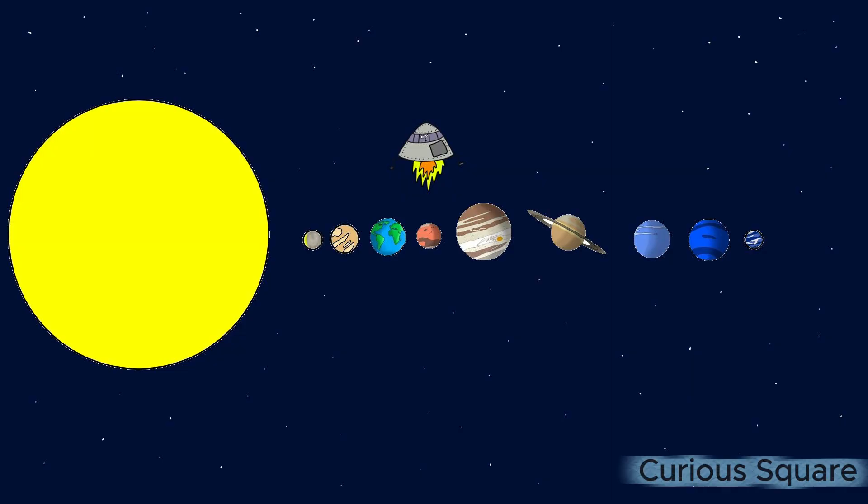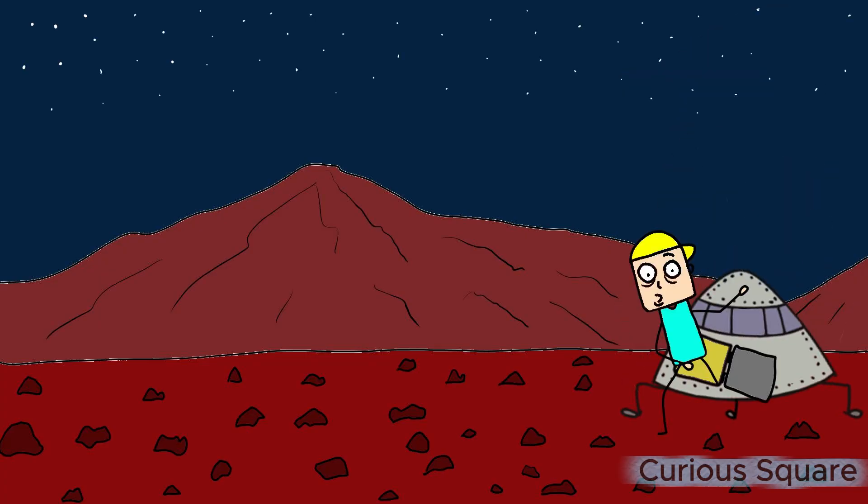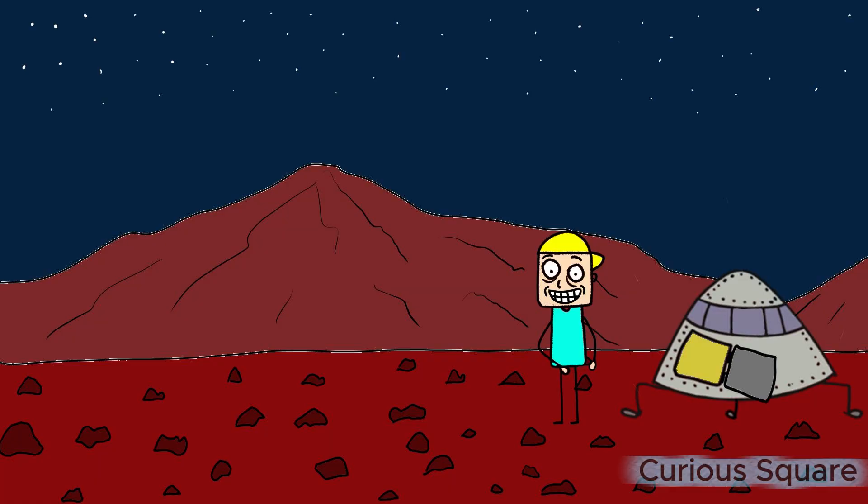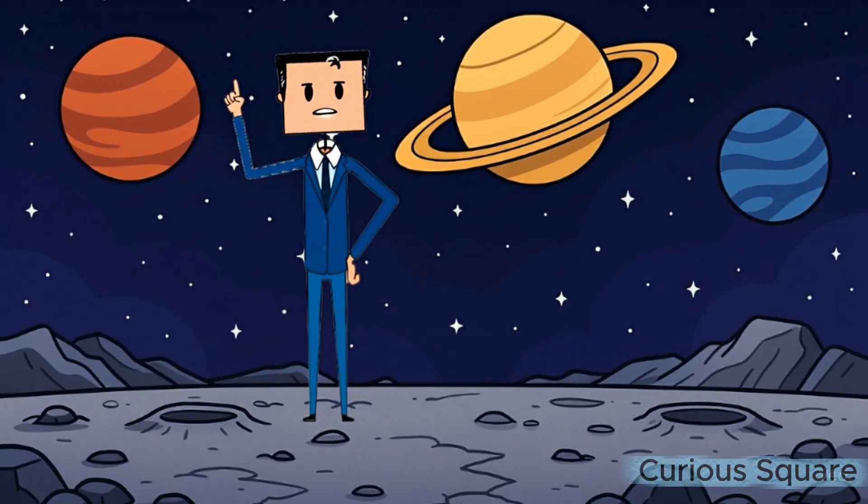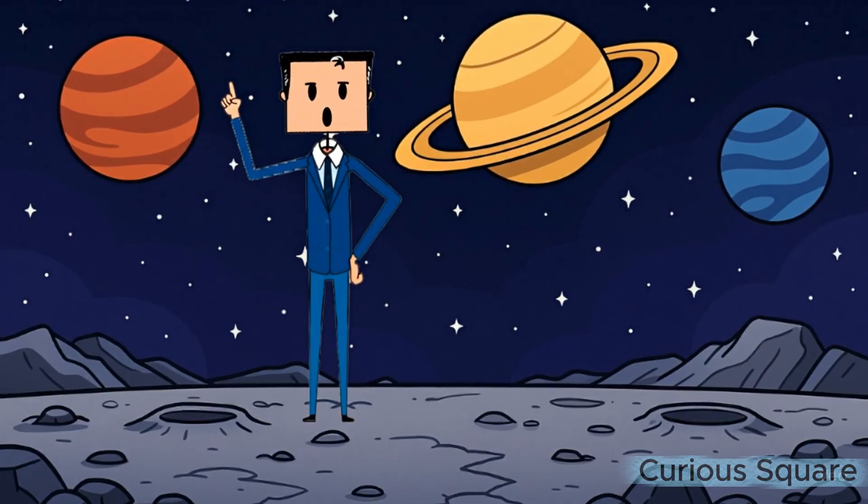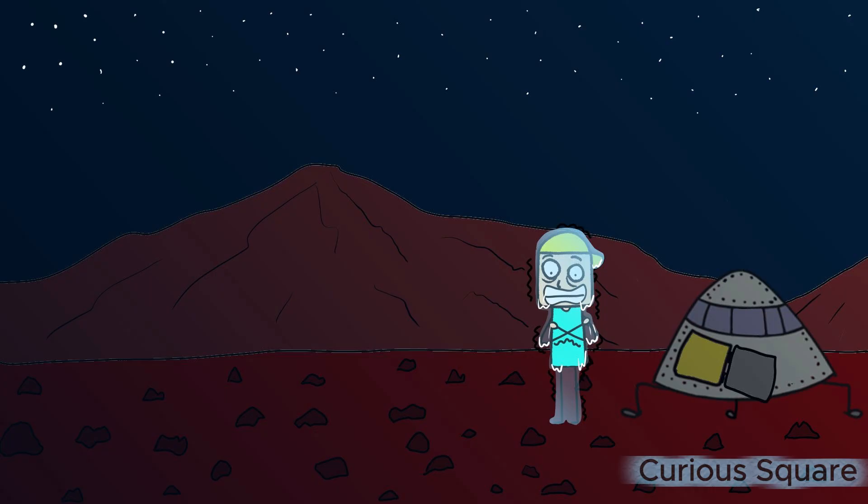Mars is the second closest planet to Earth, and among all eight, it is considered the most habitable. During the day, temperatures are far less extreme compared to Mercury and Venus, reaching up to 20 degrees Celsius in certain regions, which is relatively comfortable. The real challenge, however, appears at night or in specific parts of the planet where the temperatures plummet to minus 130 degrees Celsius.